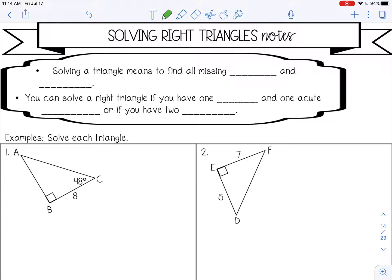Welcome to this lesson on solving right triangles. Solving a triangle means to find all missing sides and angles. You can solve a right triangle if you have one side and one acute angle, or if you have two sides.